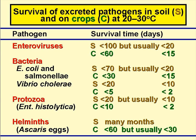Their survival on crop surfaces is much less, as they are exposed to direct sunlight and they desiccate as well. The green figures on the chart tell us that enteroviruses usually survive for less than 15 days, bacteria such as E. coli and Salmonella for less than 20 days, but Vibrio cholerae and protozoan cysts and oocysts for generally no more than 2 days, and ascaris eggs generally for only up to a month.